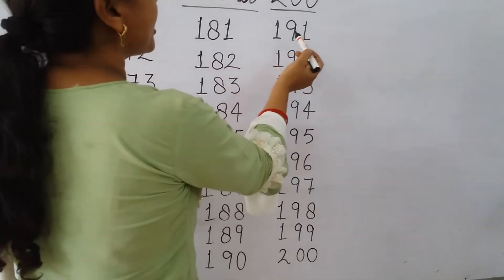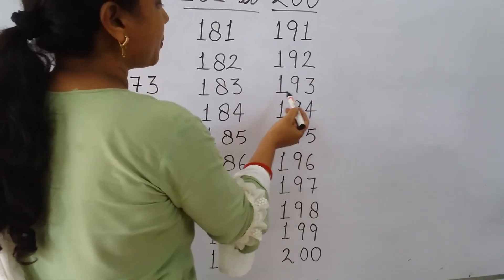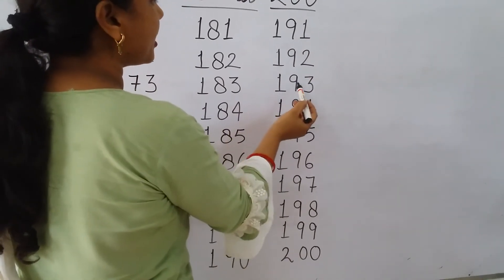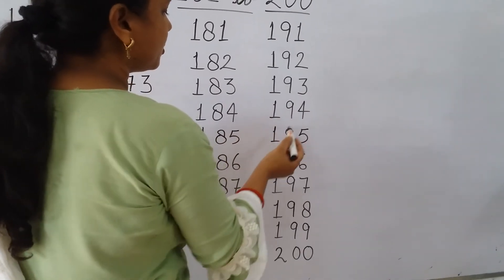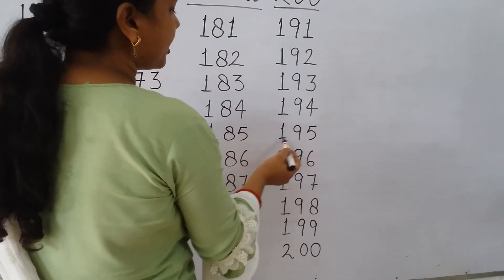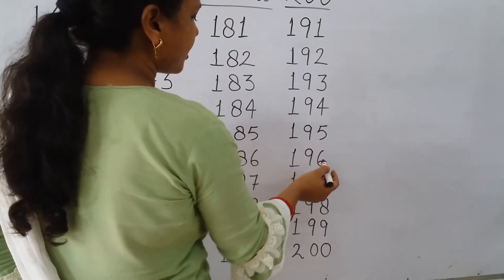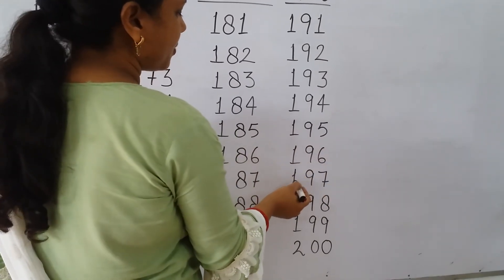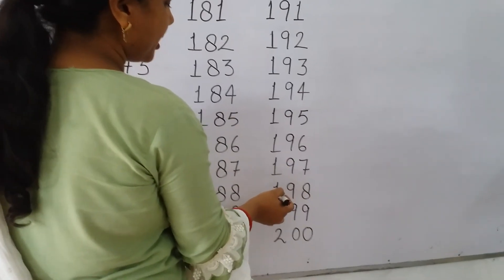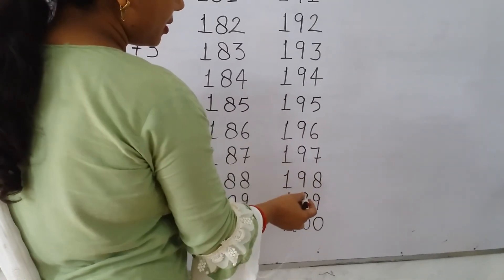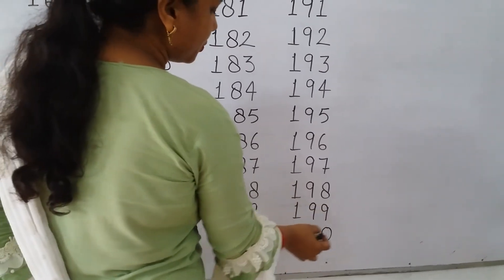Okay, next line: 191, 192, 193, 194, 195, 196, 197, 198, 199, 200.